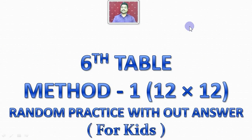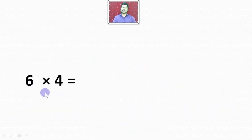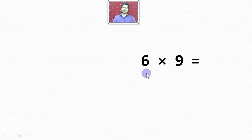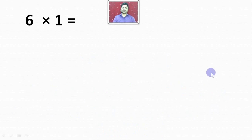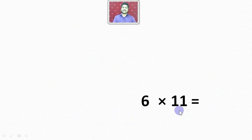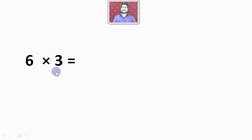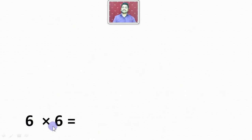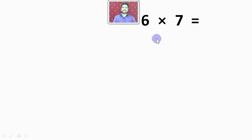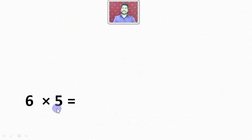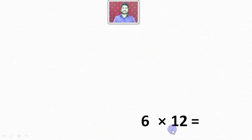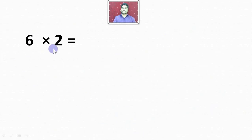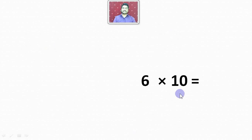6th Table Method 1 Random Practice without Answer. 6 4s are 24. 6 9s are 54. 6 1s are 6. 6 11s are 66. 6 3s are 18. 6 8s are 48. 6 6s are 36. 6 7s are 42. 6 5s are 30. 6 12s are 72. 6 2s are 12. 6 10s are 60.